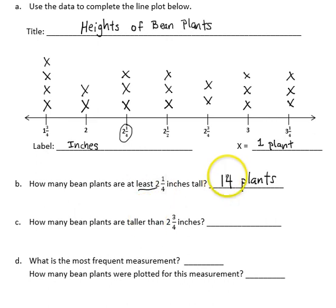Question C says, how many bean plants are taller than 2 and 3/4 inches? If I'm looking for plants that are taller than 2 and 3/4, I would not count 2 and 3/4. So I would look at the measurements that are 3 inches and 3 and 1/4 inches, and we can see that there are 6 plants that are taller than 2 and 3/4.